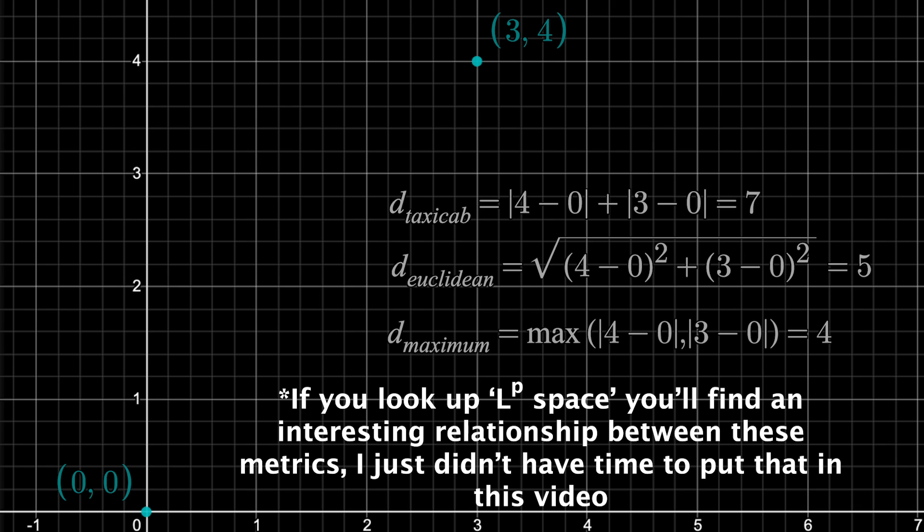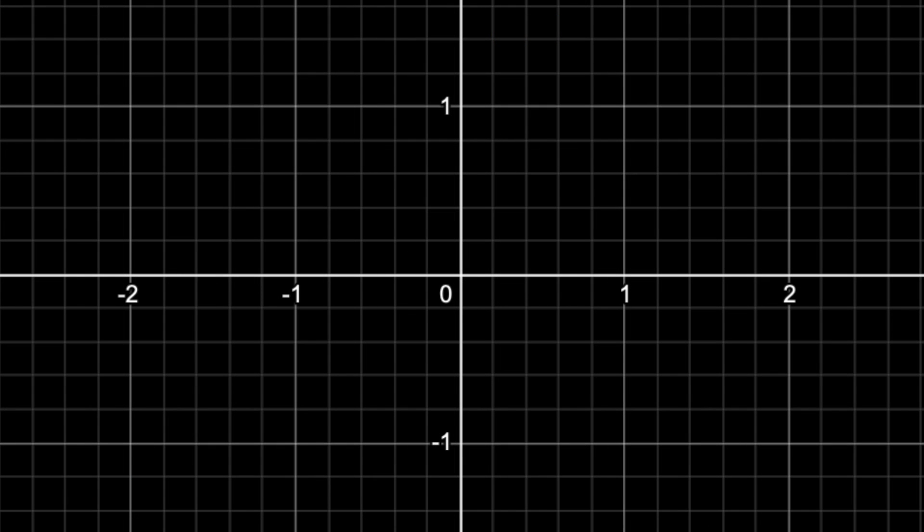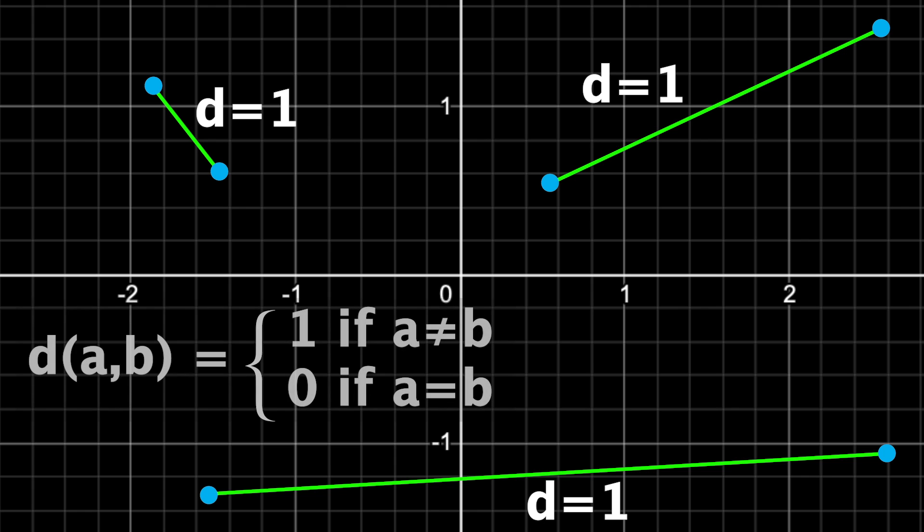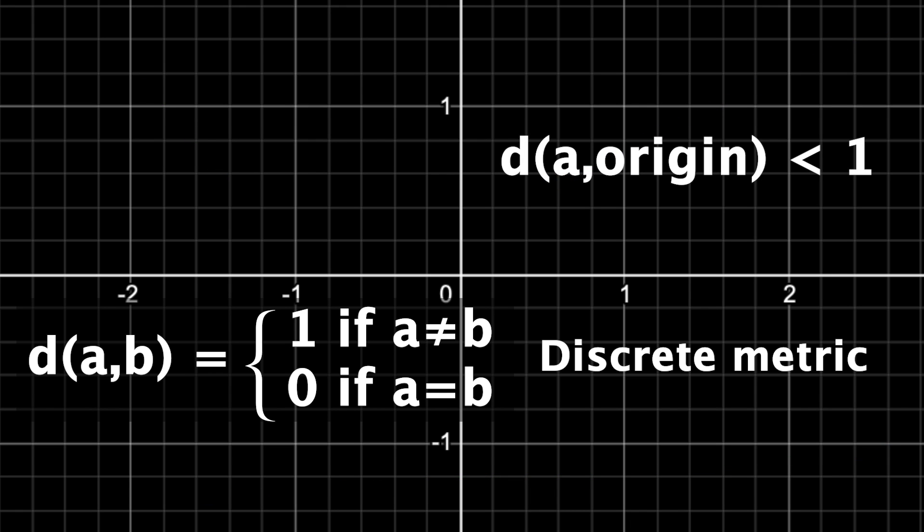But metrics can get even weirder. If I decide to say the distance between any two points is 1, unless the points are the same, then the distance is 0, so we can write the function like this. It turns out this is a metric. It satisfies all the requirements, and this is known as the discrete metric. If you wanted a set of points that are less than a distance of 1 away from the origin, for example, you'd only have the origin itself, a single point, since everything else is a distance of 1 away. And this shows that there are infinitely many metrics, since you can replace 1 with any positive number and this will still work.